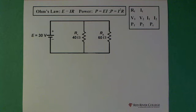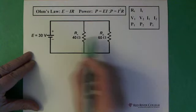Okay, so here we have a parallel circuit. We have our voltage here, 30 volts. We have a resistor 1, which is 40 ohms, and a second resistor, which is 60 ohms.